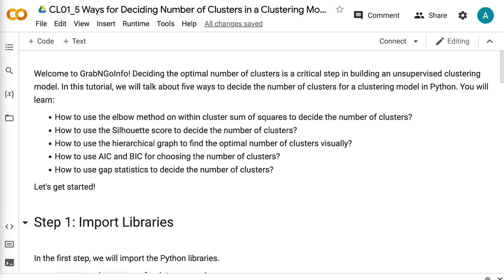Welcome to GrabNGo Info. Deciding the optimal number of clusters is a critical step in building an unsupervised clustering model. In this tutorial, we will talk about five ways to decide the number of clusters for a clustering model in Python.